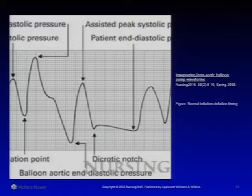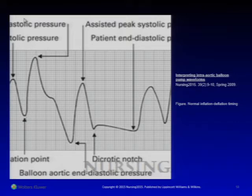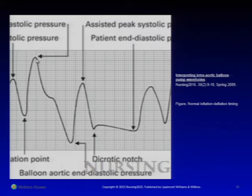The IABP waveform shows inflation at or below the dicrotic notch, augmenting diastolic pressure. Before the aortic valve opens, it deflates, lowering the assisted systolic pressure to improve systemic perfusion. The assisted diastolic pressure is higher than systolic pressure, and the assisted systolic pressure is lower than the unassisted systolic pressure.